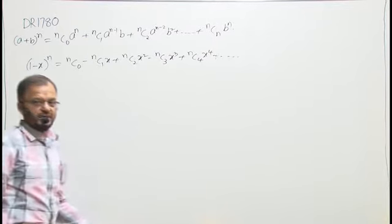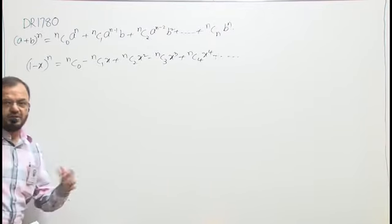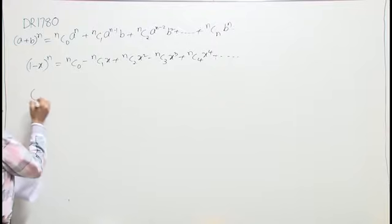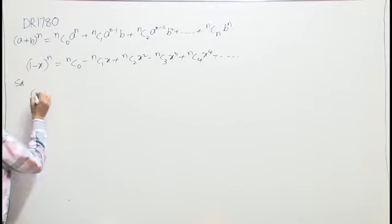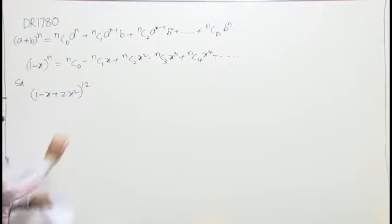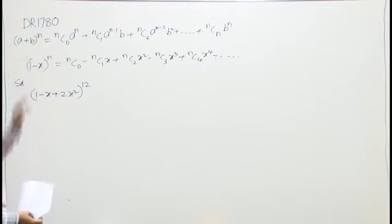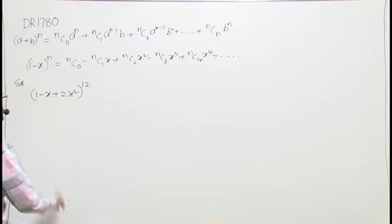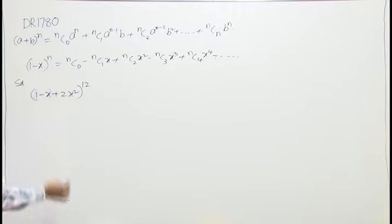Coming to the actual question: the expansion contains three terms — (1 - x + 2x²) whole power 12. I have written the formula for two terms, but here it is three terms. I will combine this and write as two terms — I will write this as one bracket.